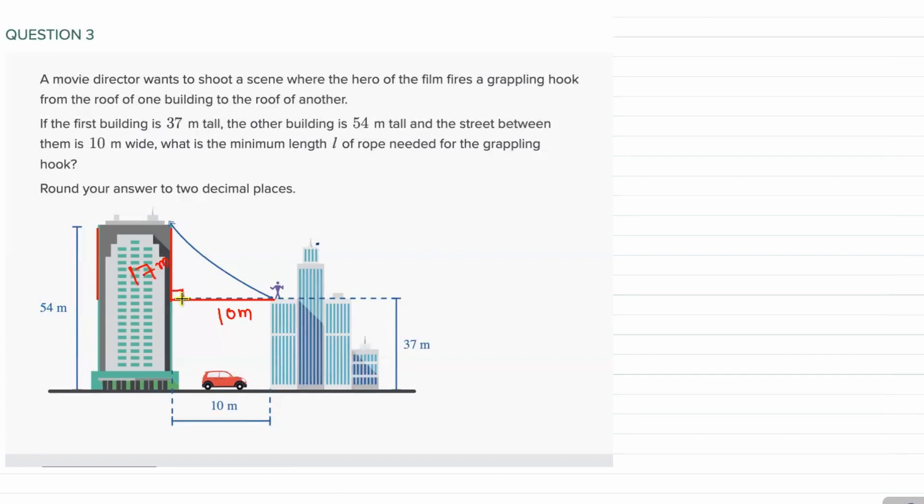Now this is supposed to be a right angle triangle, right? So now we have the height from the person where he's standing, the height of the building where he wants to grapple the rope would be 17 meters, and the gap between the two buildings is supposed to be 10 meters. Exactly.